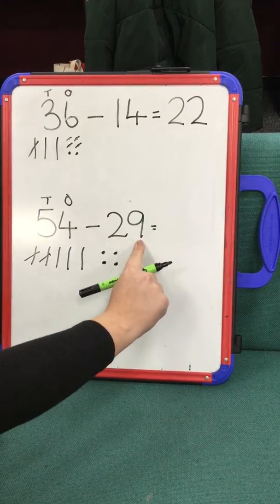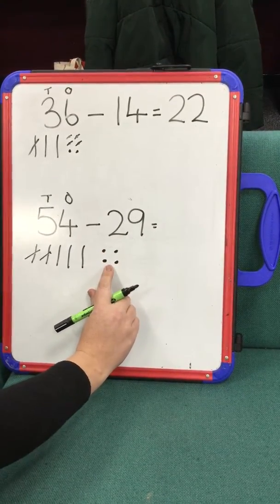I've got 9 ones to take away. Let's count. I've got 4 here. I haven't got enough.